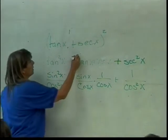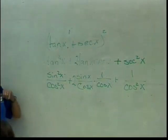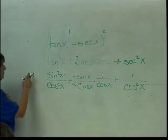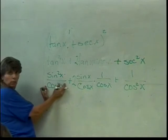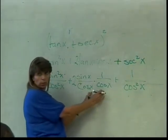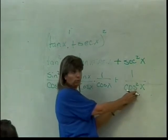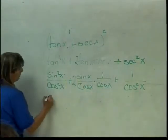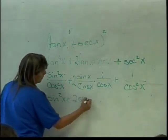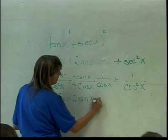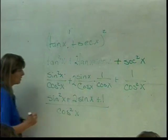Oh, did I forget my two? I did. Thank you. There's my two. Alright, now what? Well, I can put them all together because this has cosine squared as a denominator. When I multiply these together, I'll have cosine squared in my denominator, and here I have cosine squared in my denominator. So far, so good. So I will have sine squared of x plus 2 sine of x plus 1 all over cosine squared of x.